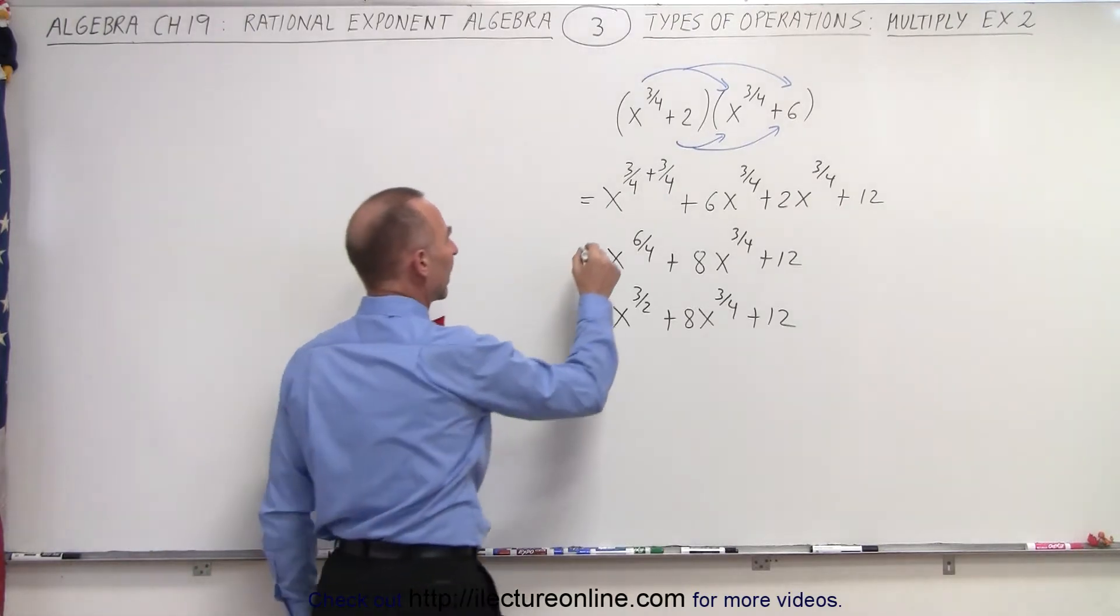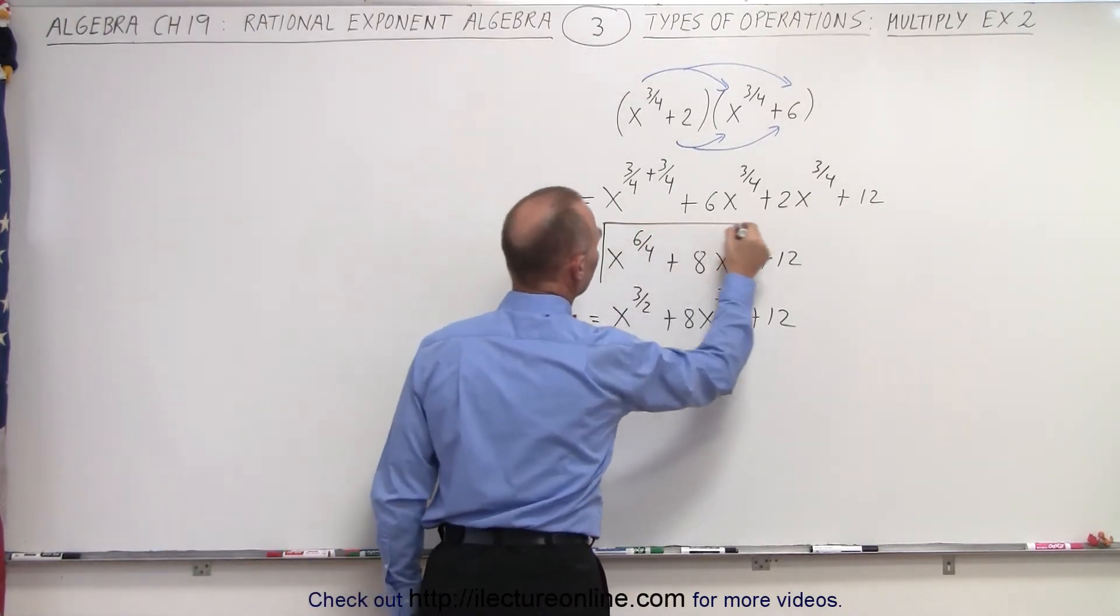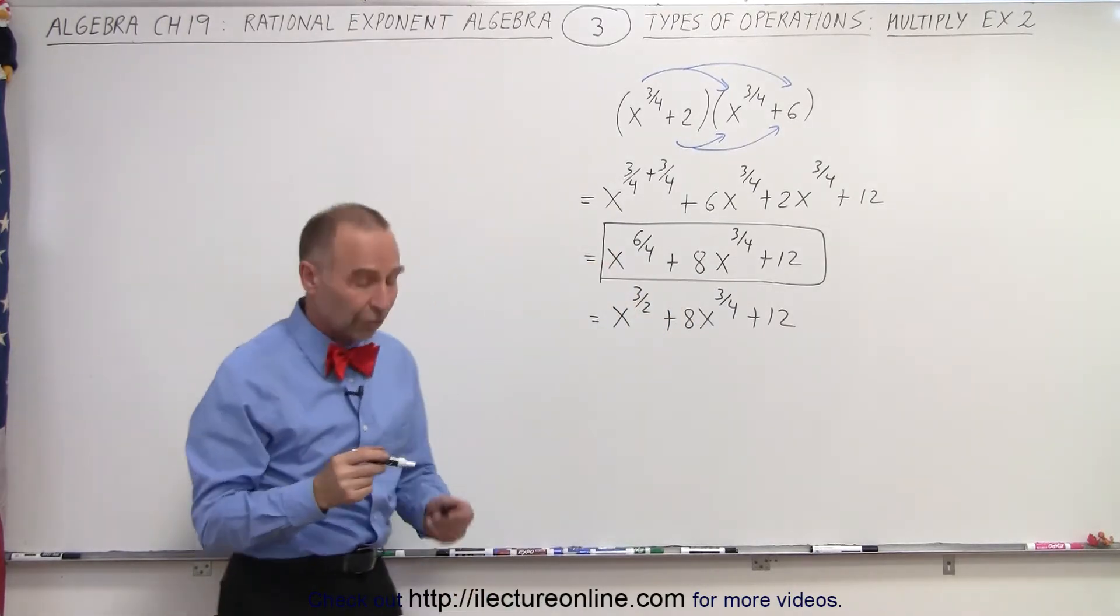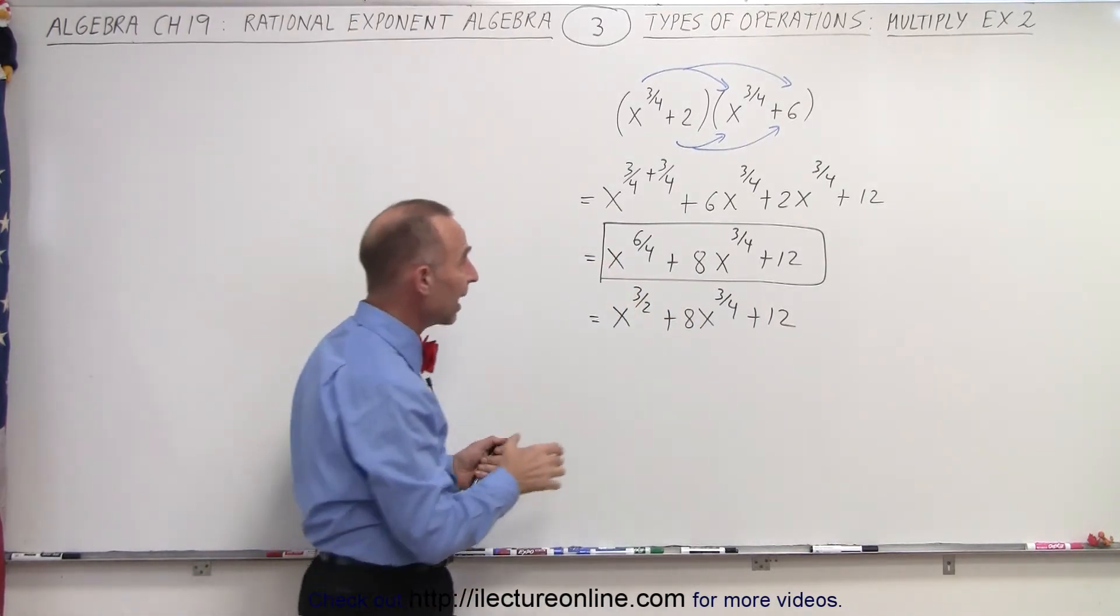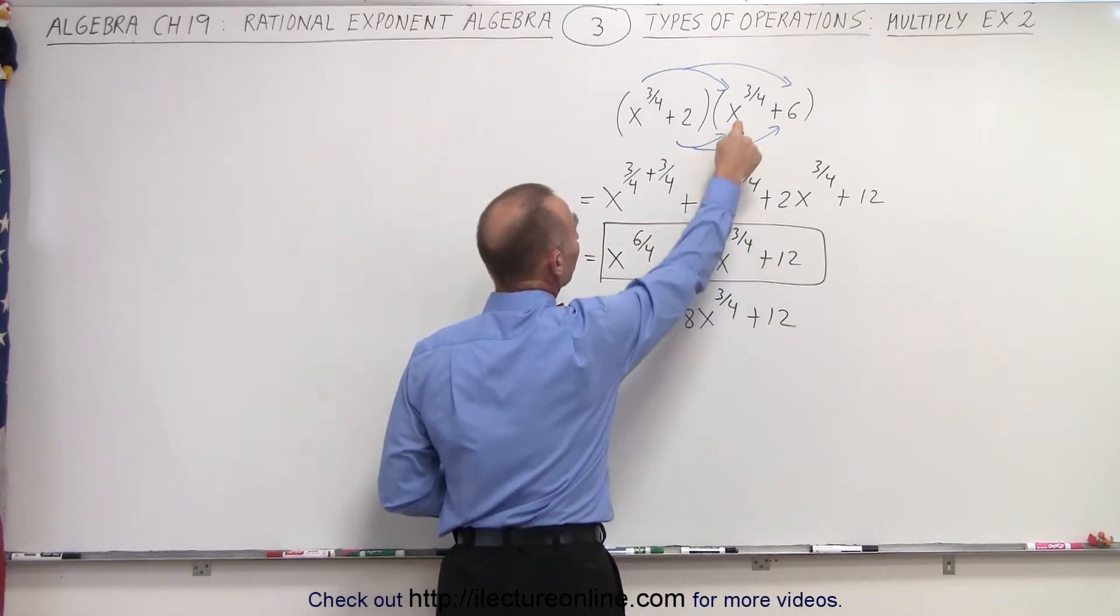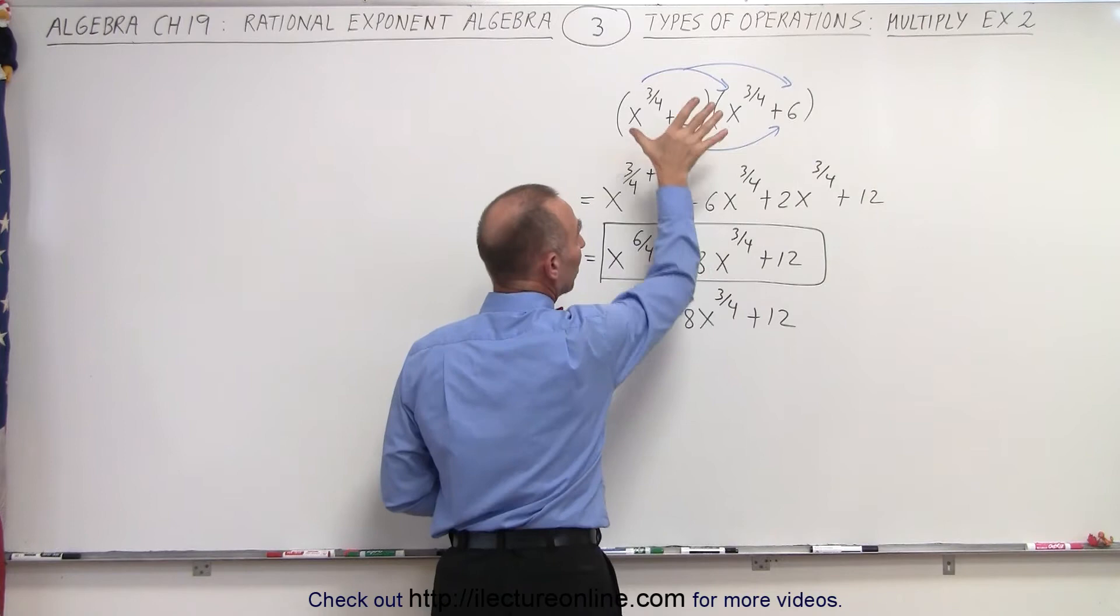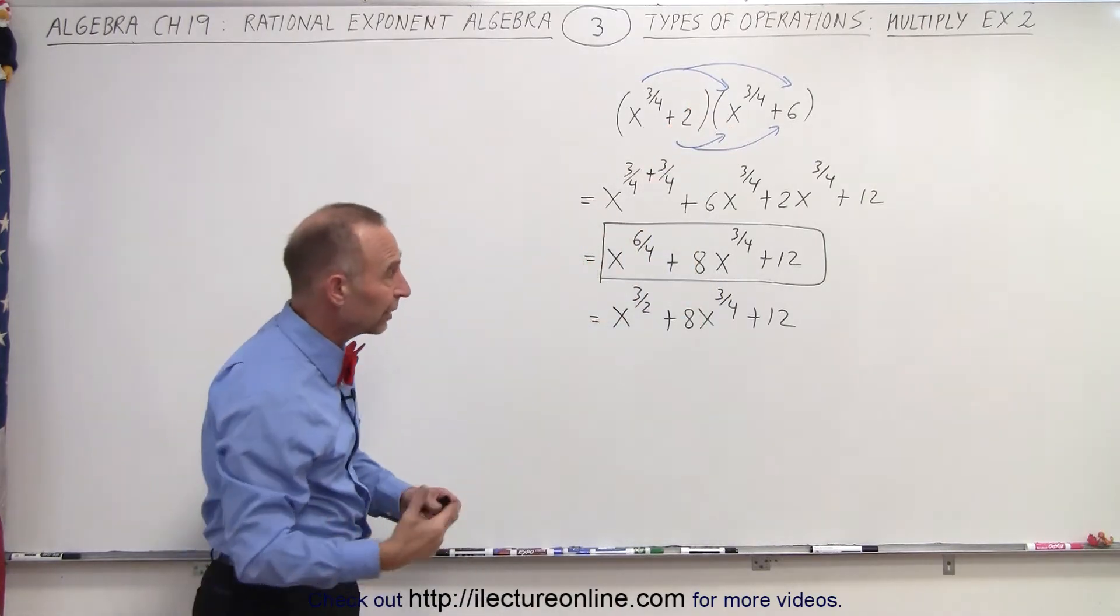Now notice, if I go back to here, this portion right here, if you were given this trinomial and they ask you to factor it, what they're saying is, can you go from this back to the original expression? In other words, can you write the trinomial as a product of two binomials? And of course, that's called factoring.